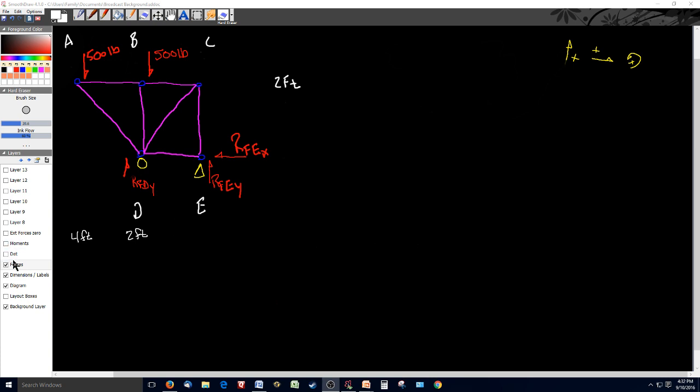As we look at this truss, what I've drawn out is a truss with five joints: A, B, C, D, and E, a pin at E, a roller at D, and a load at A of 500 pounds, and a load at B of 500 pounds also.